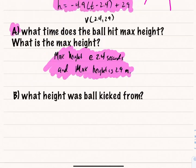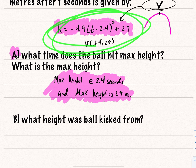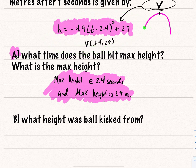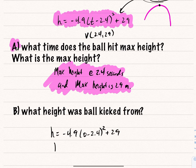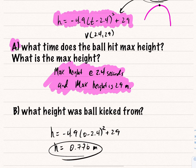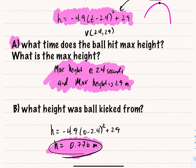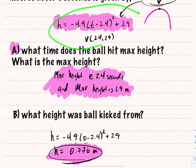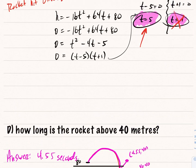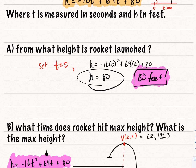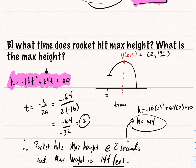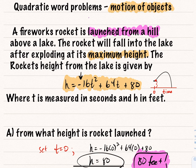Part B asks what height the ball was kicked from — same idea as before. Setting time equal to 0: h equals negative 4.9 times (0 minus 2.4) squared plus 29, which gives approximately 0.776 meters. So the ball was kicked from a height of 0.776 meters. Vertex form makes it easier than standard form in many cases. Review these two problems — they cover a solid chunk of motion-of-objects content. Watch the video again if needed, try the problems yourself, and that concludes our lesson on quadratic word problems with motion of objects.